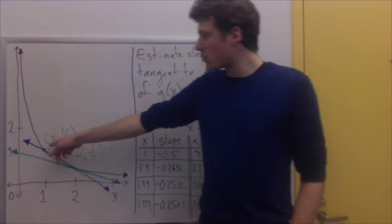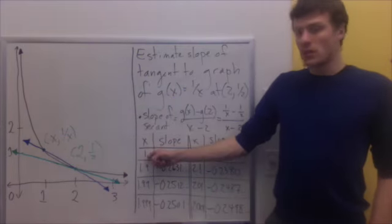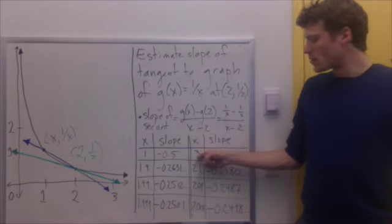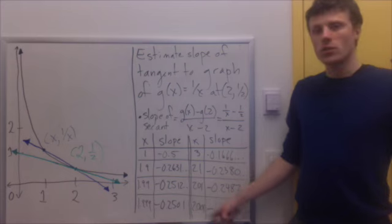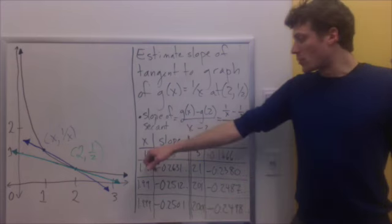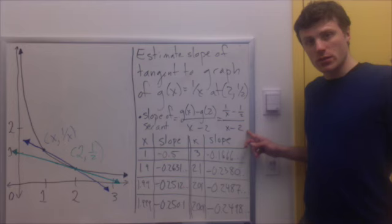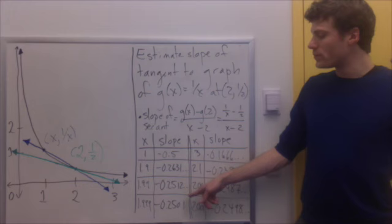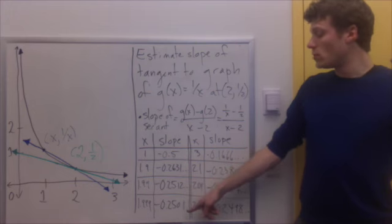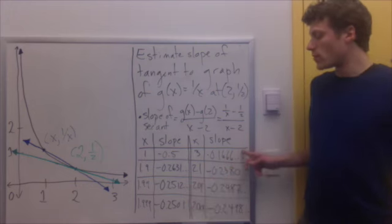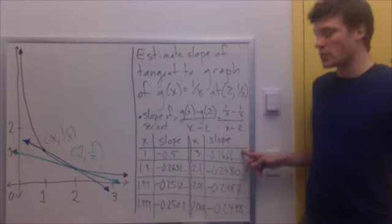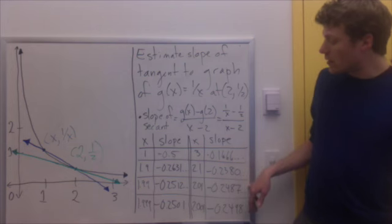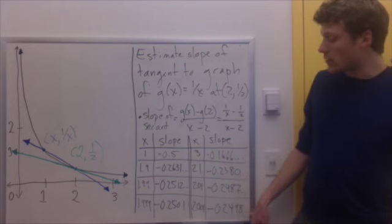We're going to plug in values for x getting closer and closer to 2. From the left: 1, 1.9, 1.99, and 1.999. From the right: 3, 2.1, 2.01, and 2.001. When I plug these into the formula for the slope of the secant, from the left I get negative 0.5, negative 0.2631, negative 0.2512, negative 0.2501. From the right I get negative 0.1667, negative 0.2380, negative 0.2487, and negative 0.2498.